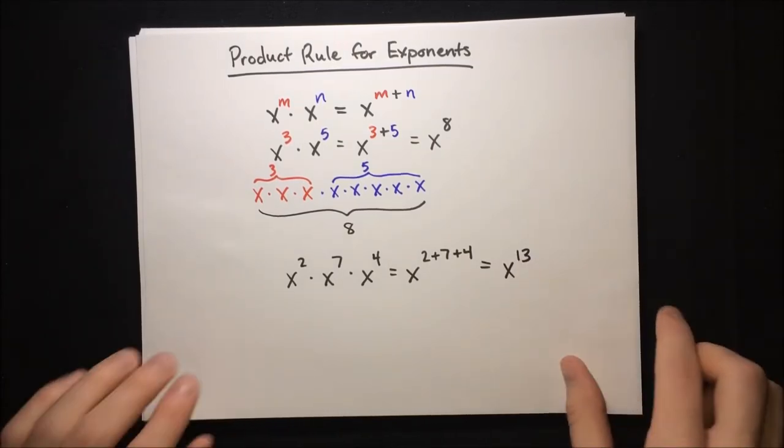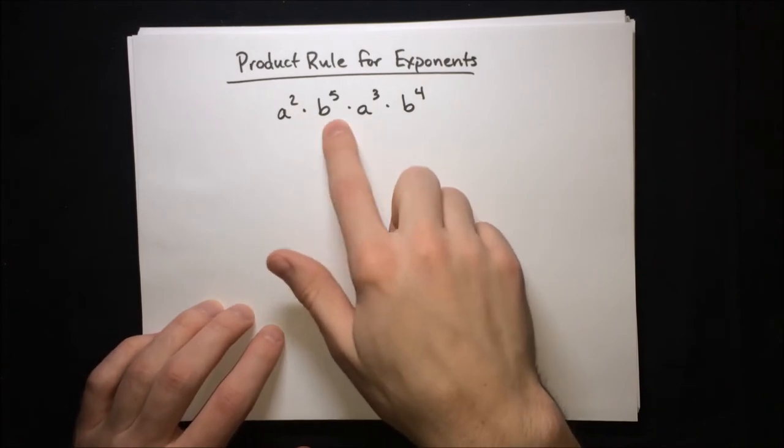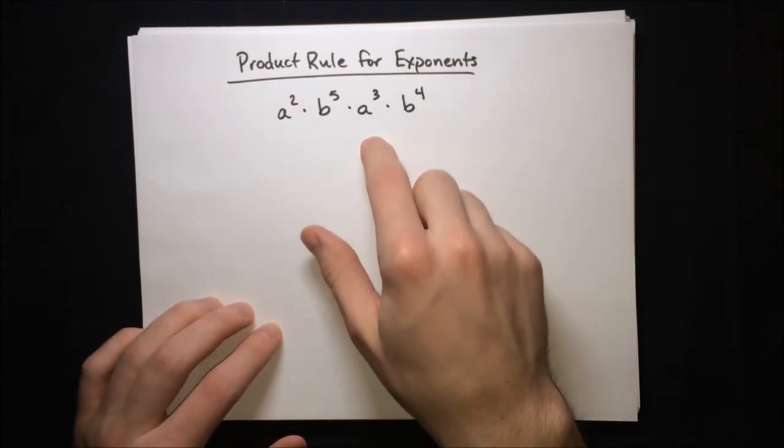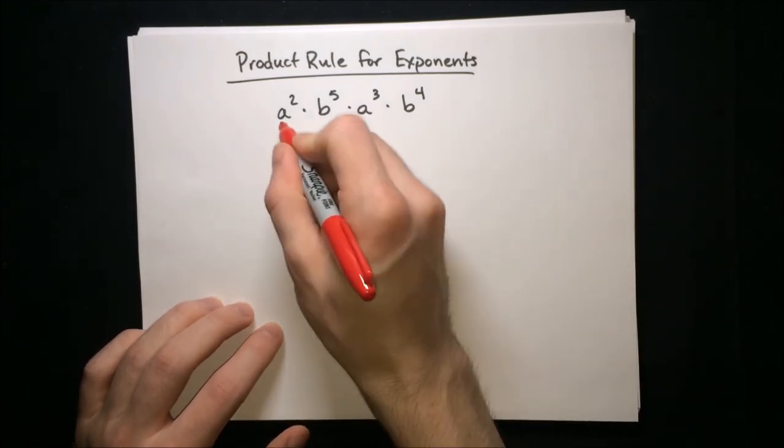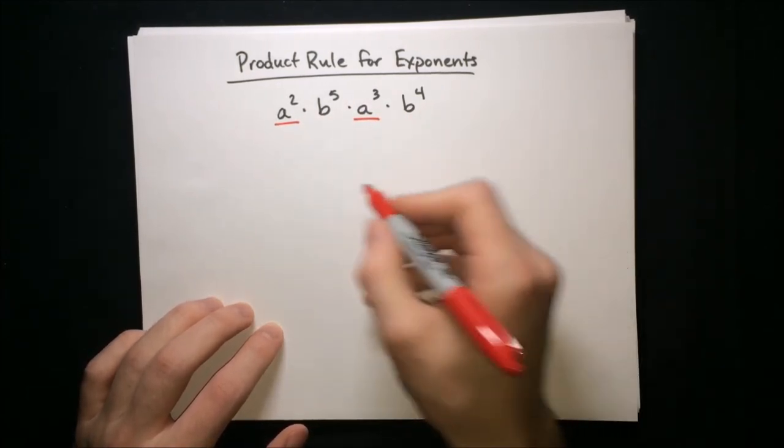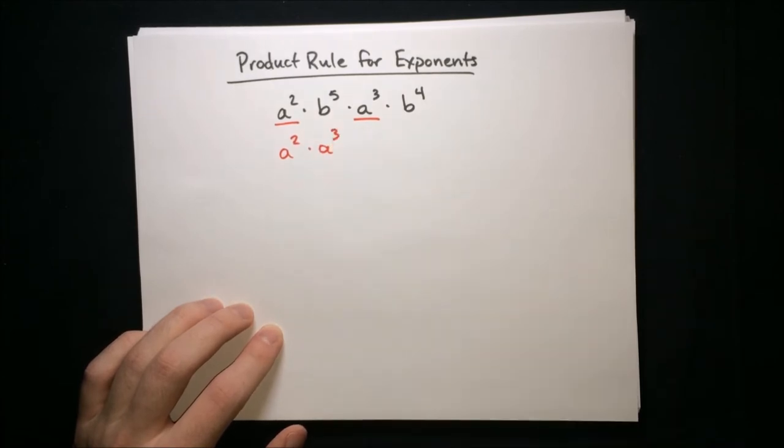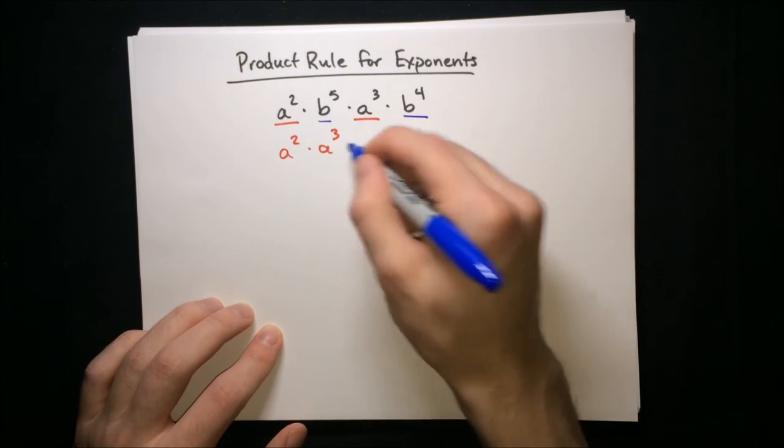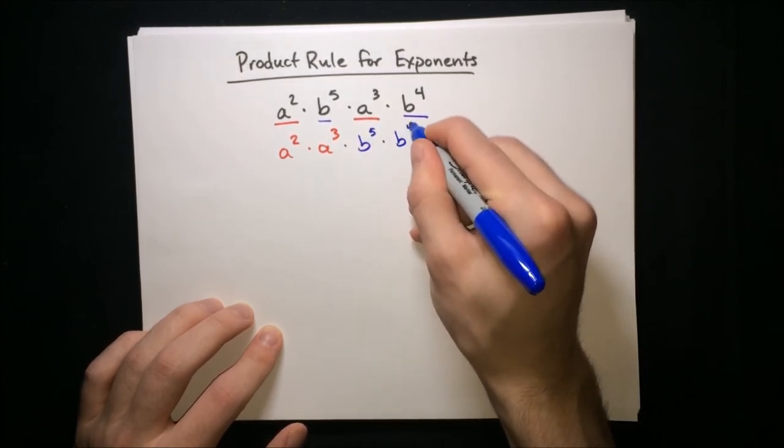Let's do some examples. First example here, we're going to have two different variables this time. So the way we simplify this product is we first have to group the variables. Let's get a with a, and we've got a squared times a to the third. And then let's also get b with b, so times b to the fifth times b to the fourth.